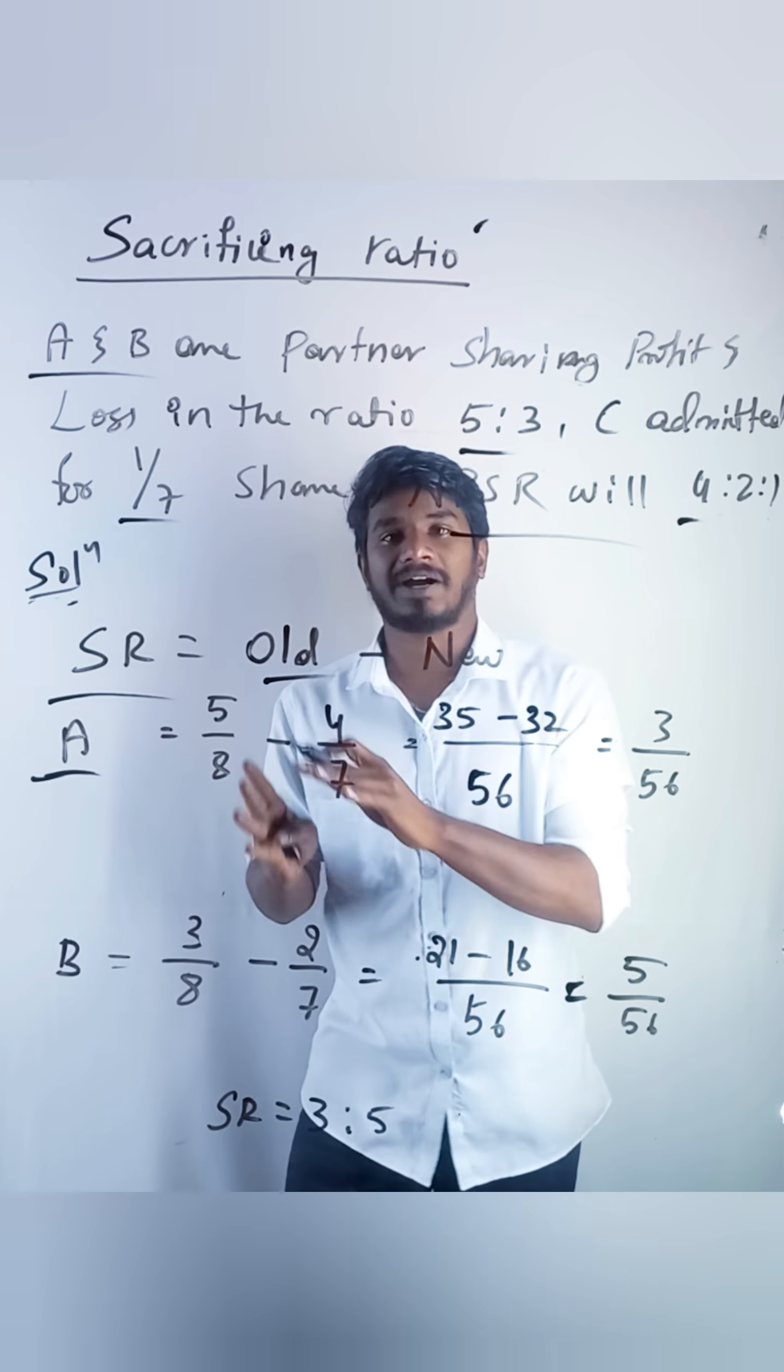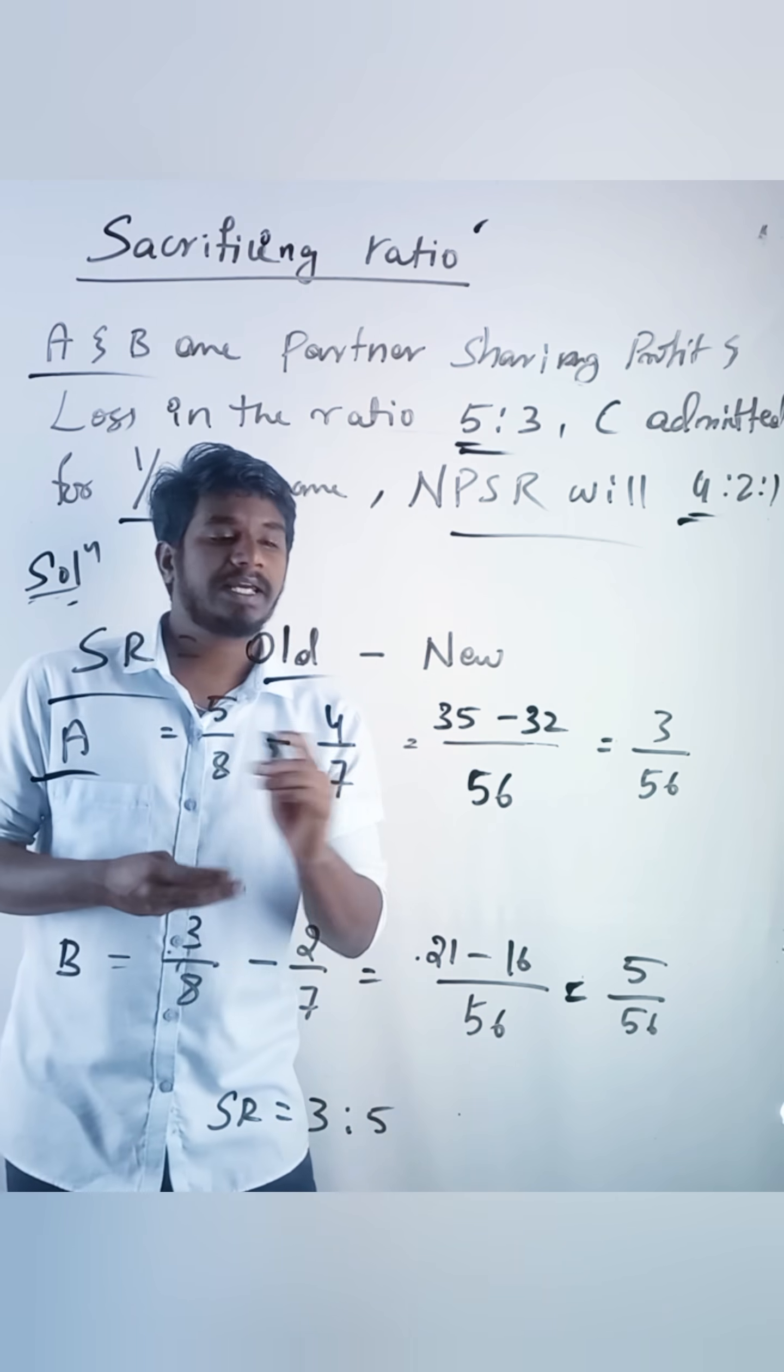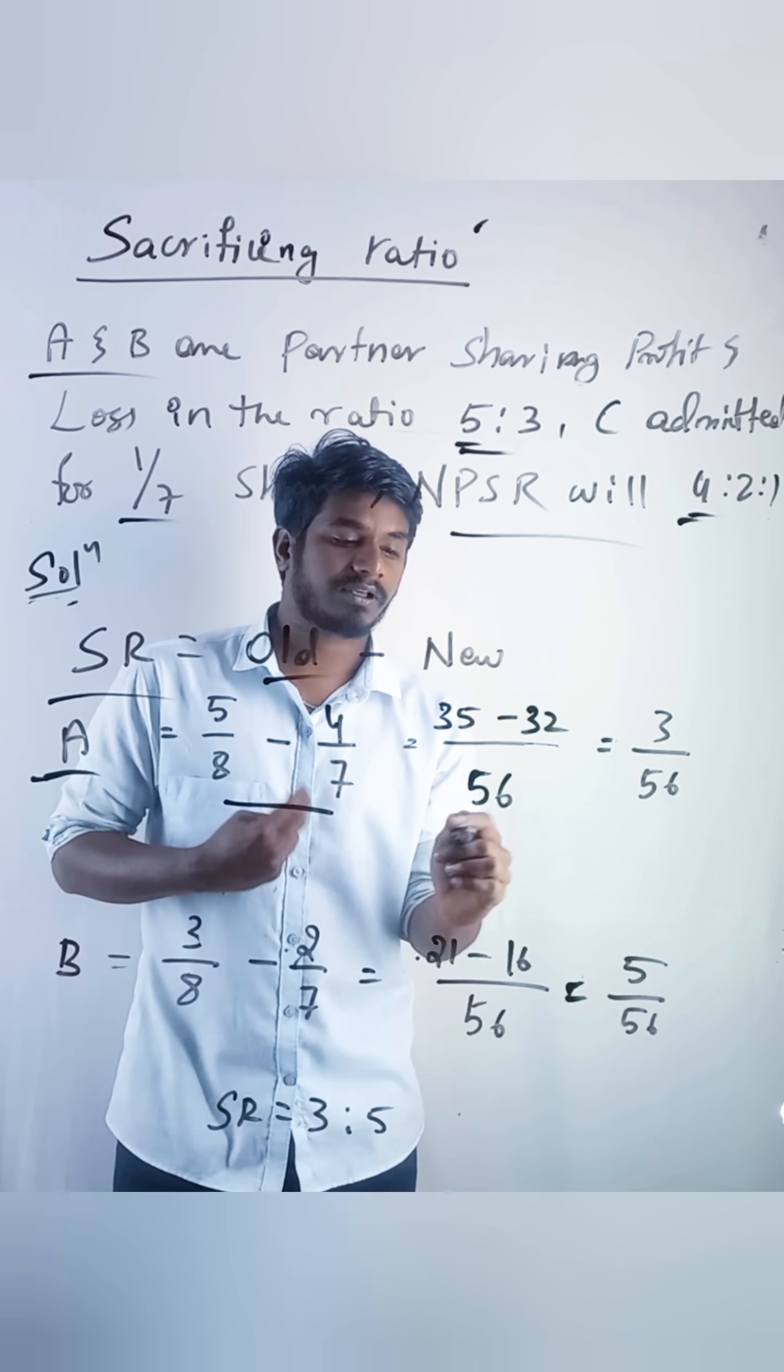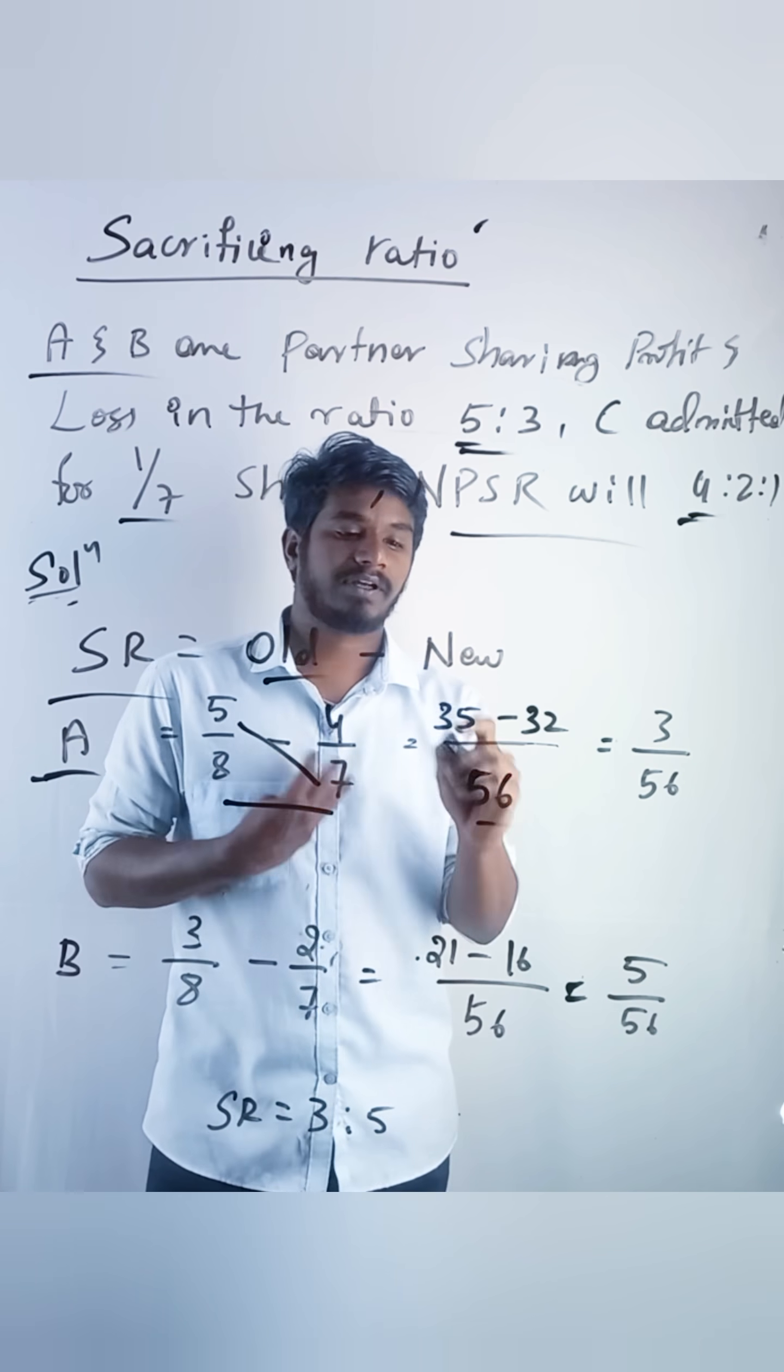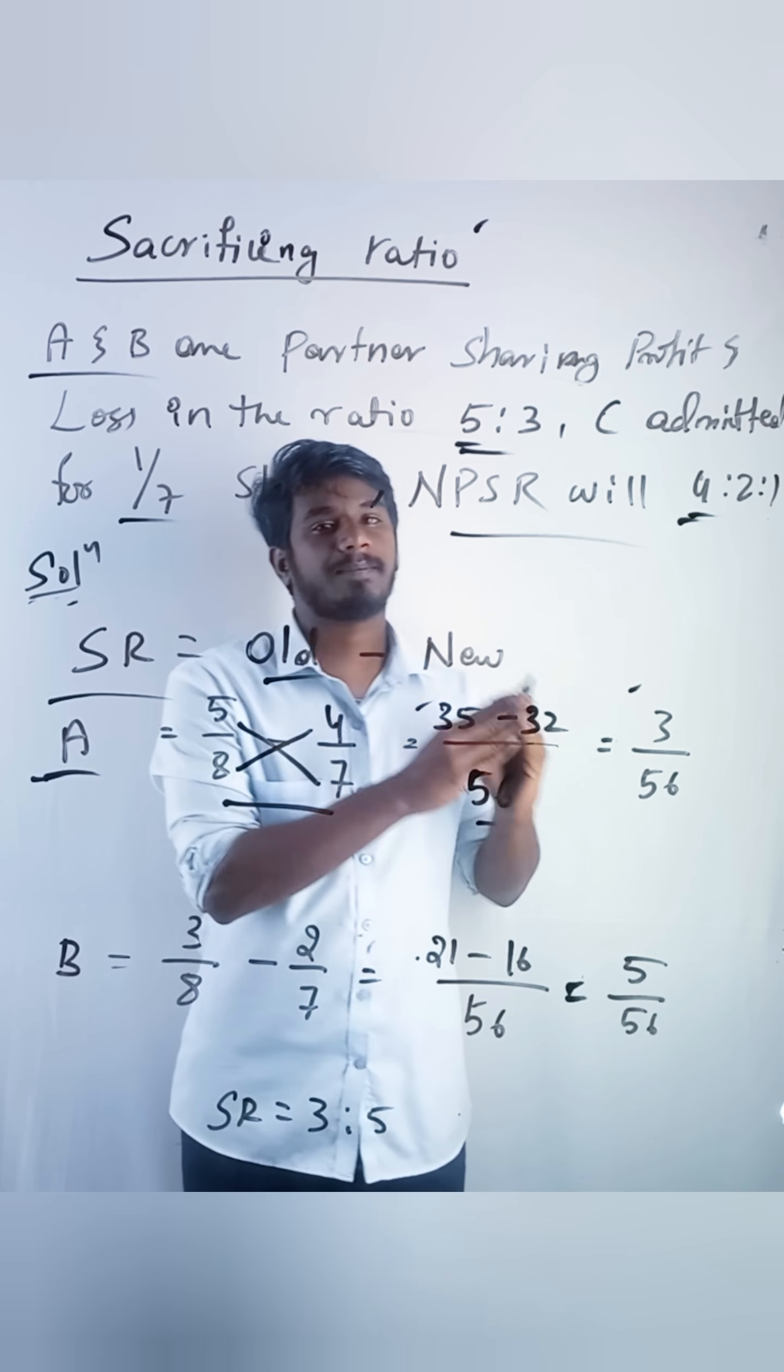So A's old share is 5 by 8, minus new share is 4 by 7. So just 8 into 7, 56, 5 into 7, 35, 8 into 4, 32. If you minus you will get 3 by 56.